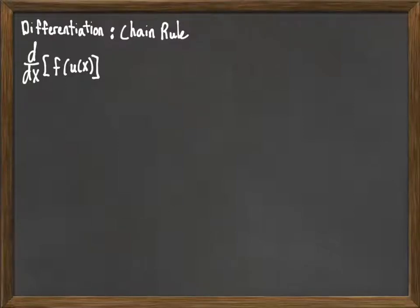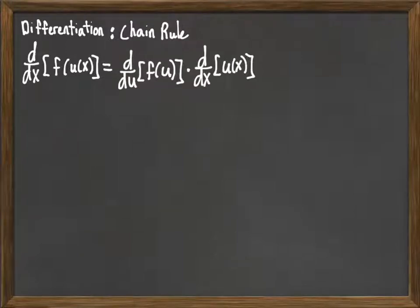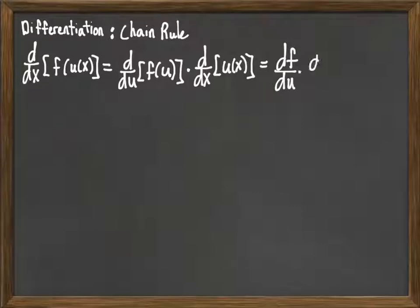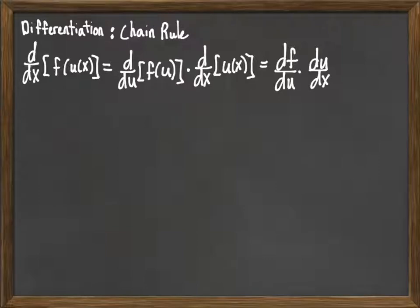Here we're looking at the derivative of f of u of x, and the chain rule states that we take the derivative of f of u — the outer function — with respect to u, and then multiply that times the derivative with respect to x of u of x. You can think of this as df/du times du/dx, and visually it looks like the du's cancel out, so the process gives you df/dx, which is what we want.